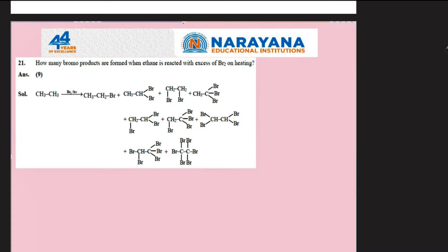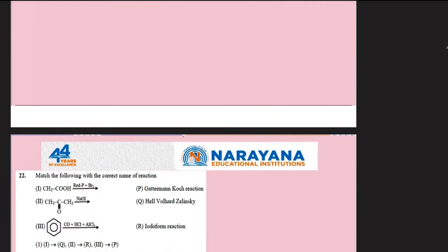How many bromo products are formed when ethane is heated with excess bromine? This question asks for all possible products. Ethane can form one monobromo product, two different dibromo products, two different tribromo products, two different tetrabromo products, one pentabromo, and one hexabromo product. Total number of products is nine.